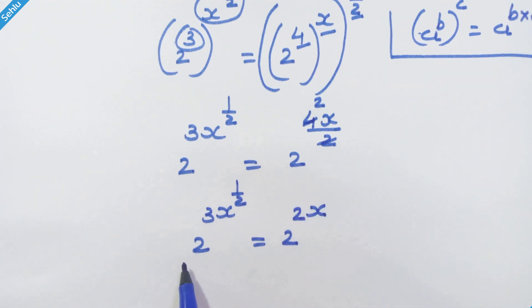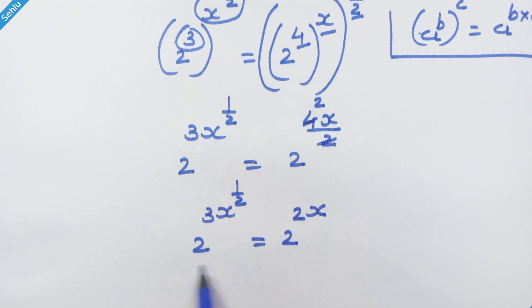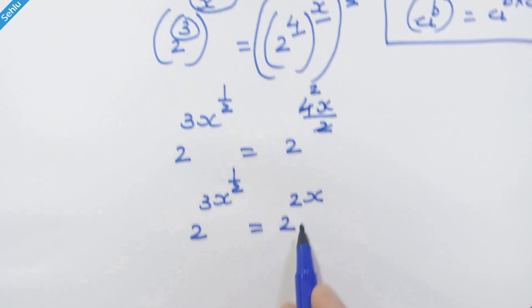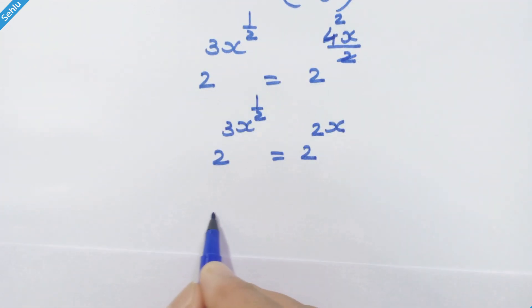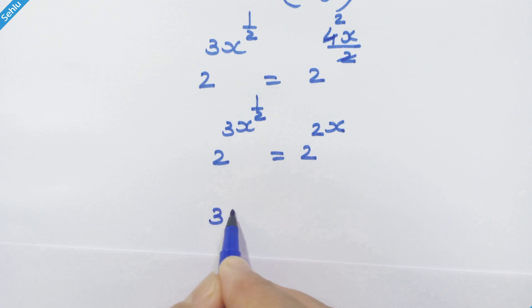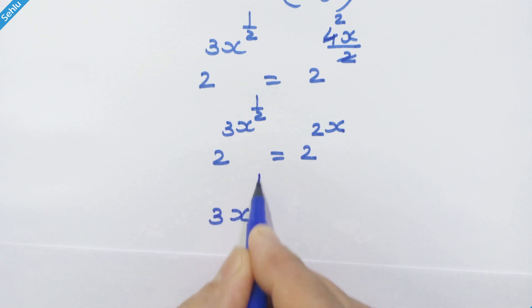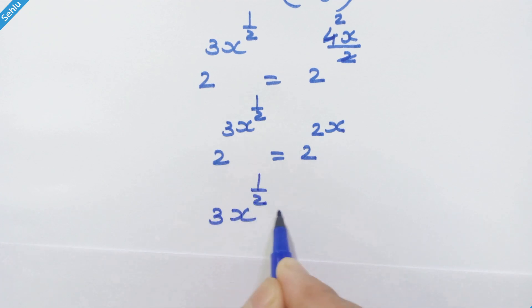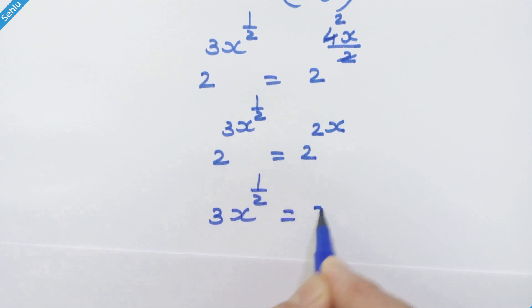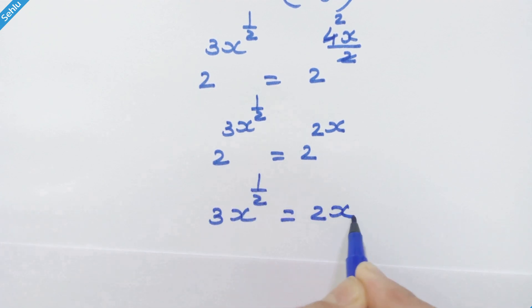Now it's the same base on both sides, so we can equate their exponents. So we have 3x raised to 1/2 is equal to 2x.